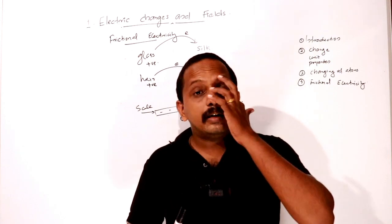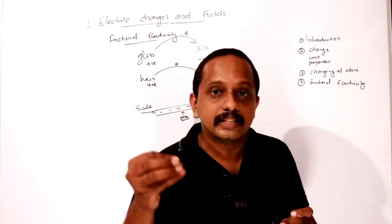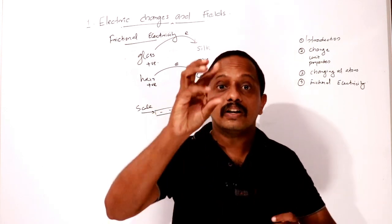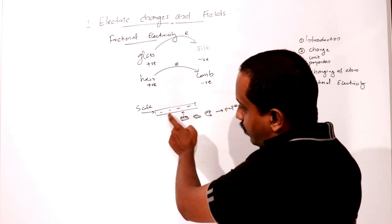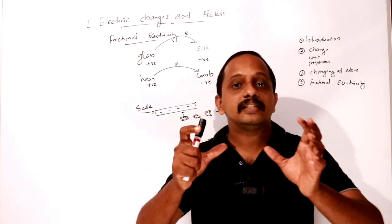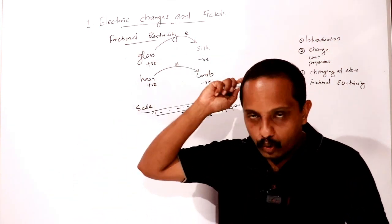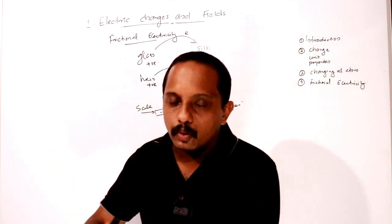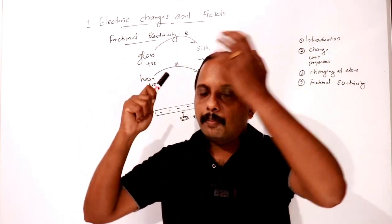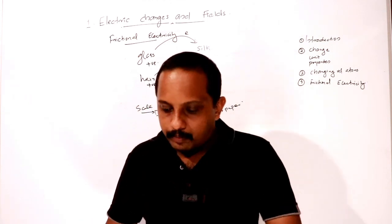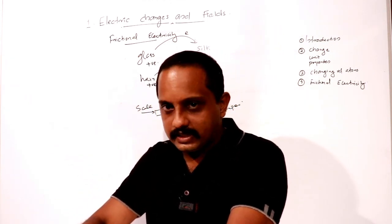Insulators do not allow charge to flow. For example, a glass rod is an insulator. When we charge a glass rod by rubbing it with silk, the charge remains on the glass rod because glass is an insulator.